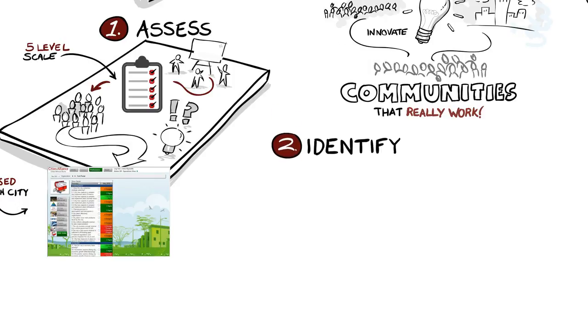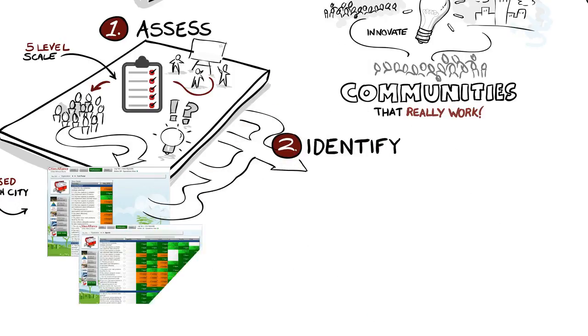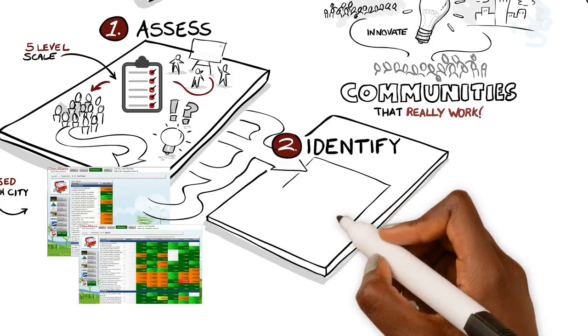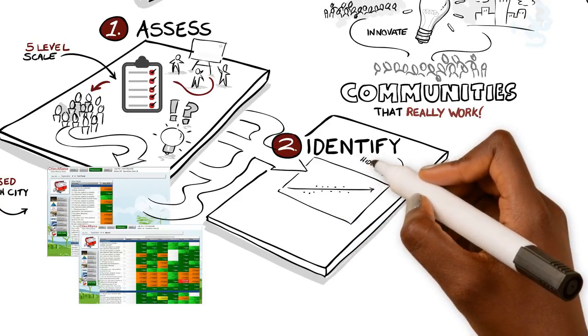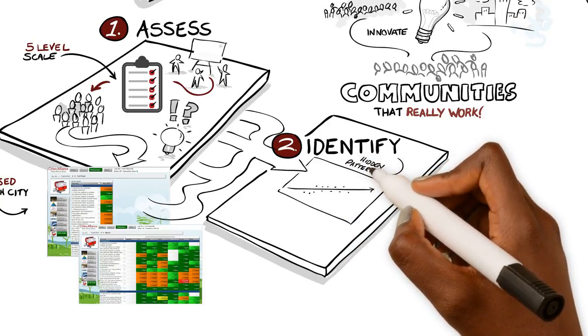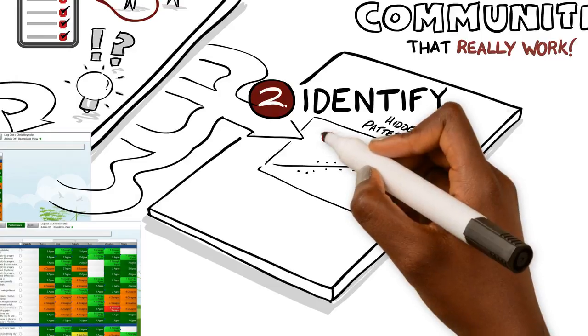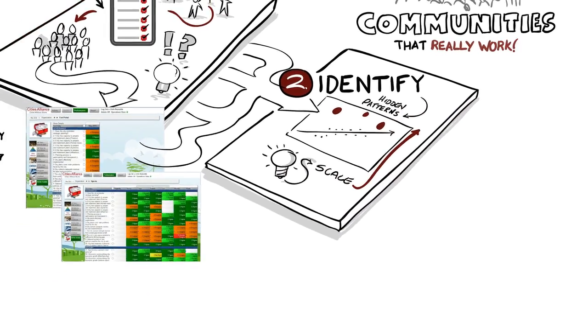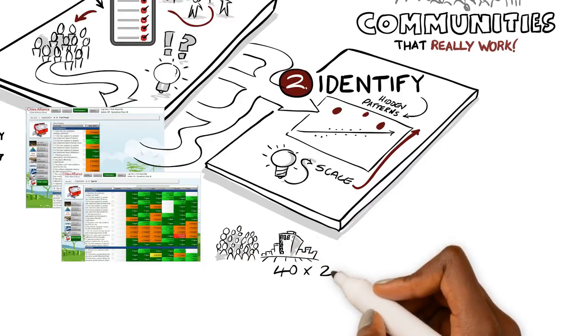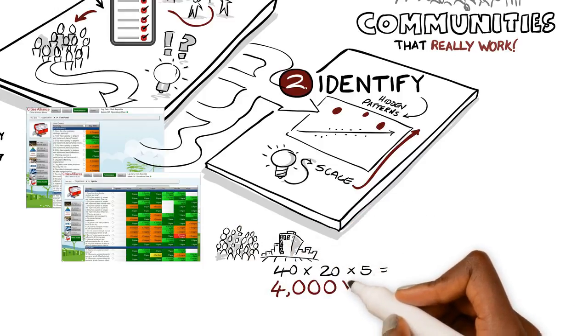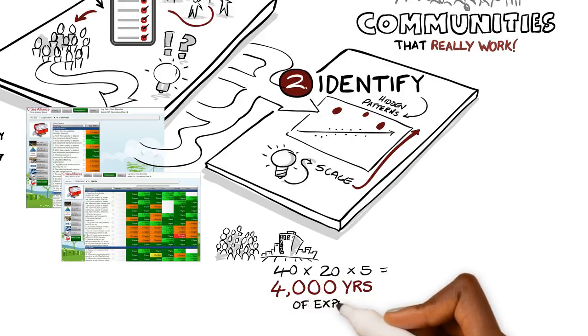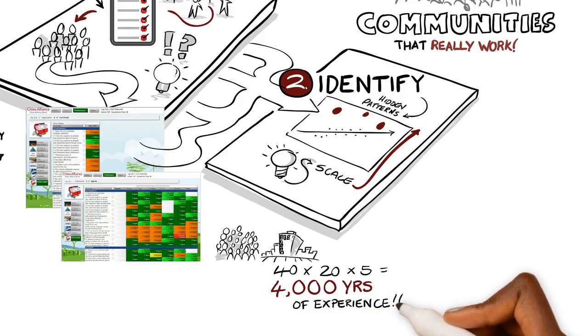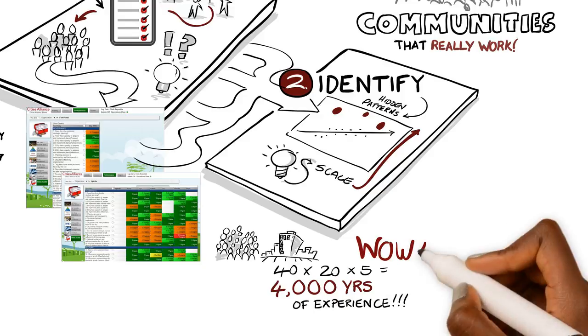Identify. The knowledge platform combines results for all cities. Comparing results reveals hidden patterns and priority service areas. This helps to identify positive deviants, simple, brilliant ideas that can scale. By bringing together 40 people in each of 20 cities, each with five years experience, the research is learning from 4,000 years of practical experience.